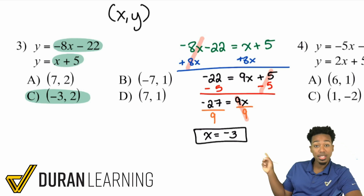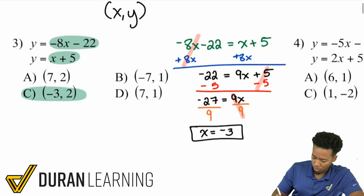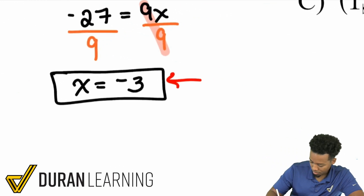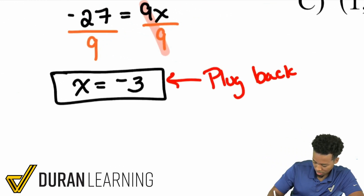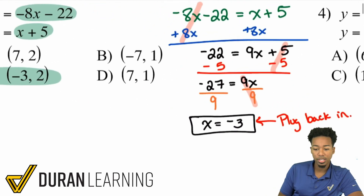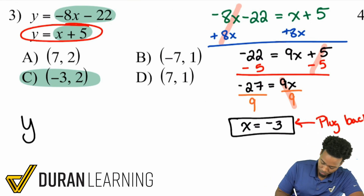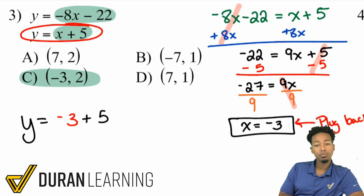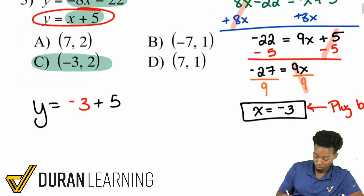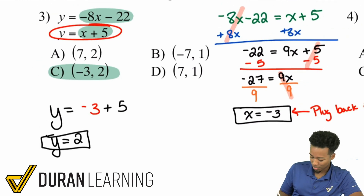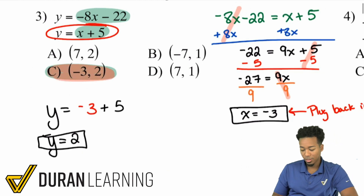But if you did want to find y: plug x equals negative 3 back into either equation. Using the second one, y equals x plus 5: y equals negative 3 plus 5, which is the same as 5 minus 3, giving y equals 2. So the full answer is (negative 3, 2), confirming answer choice C.